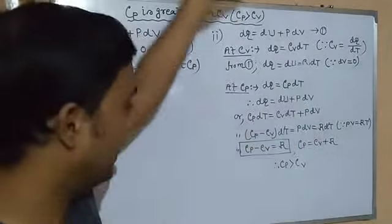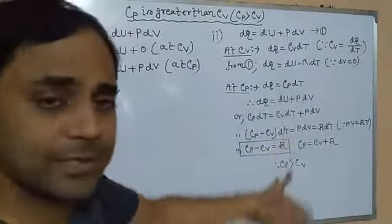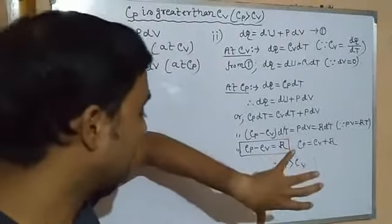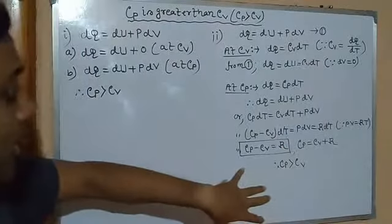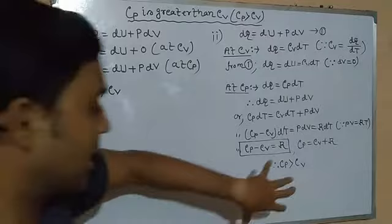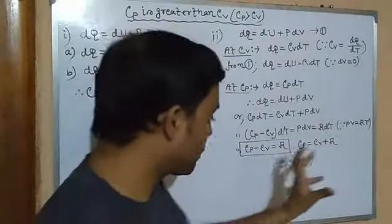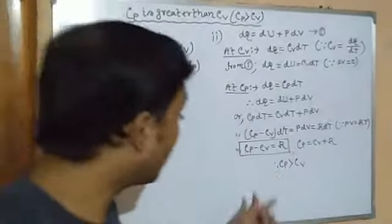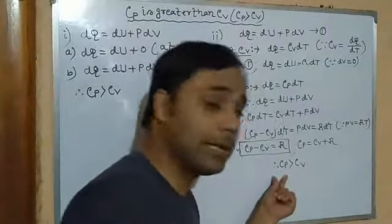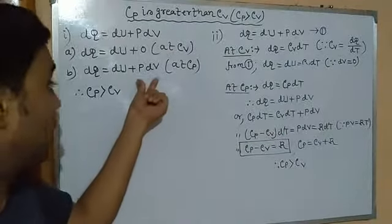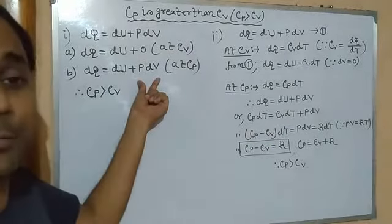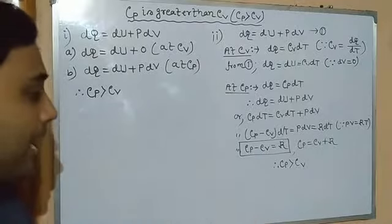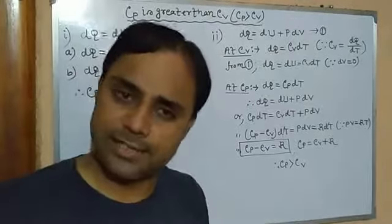Using the first law of thermodynamics and mathematical derivation, we can clearly see that the specific heat of a gas at constant pressure is always greater than that at constant volume, because at constant pressure the gas does some external work due to volume change. That is why Cp is always greater than Cv.